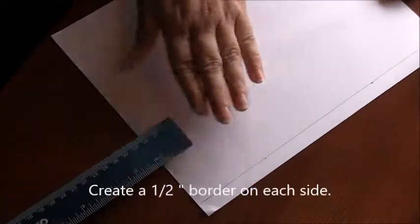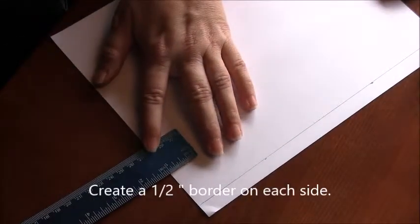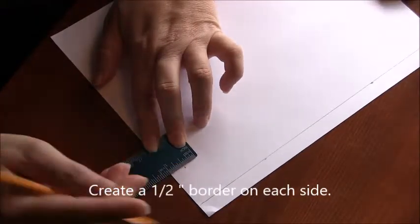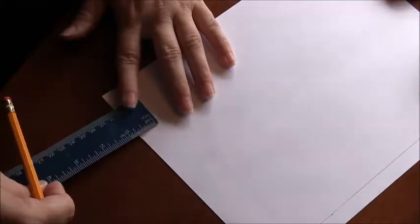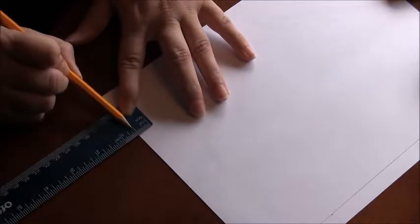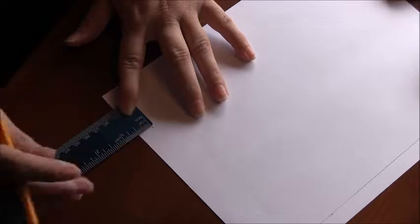Now you're going to just do the same thing on the other sides. We're going to mark a tick mark there at the half inch mark. And again, notice that I'm lining it up with the half inch mark and then I'm just marking at the first.